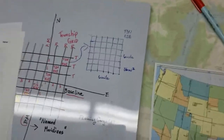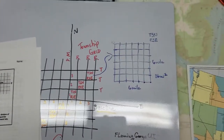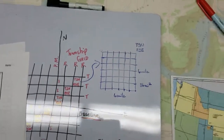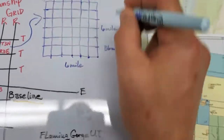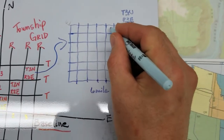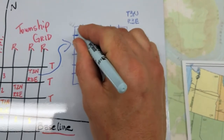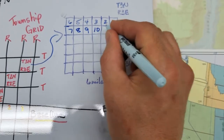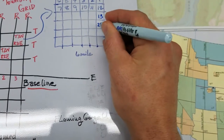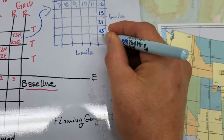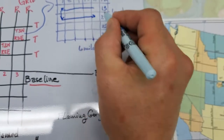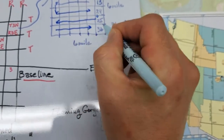These 36 squares are numbered. Starting in the northeast corner and proceeding west: 1, 2, 3, 4, 5, 6, then we come down and go east: 7, 8, 9, 10, 11, 12, and so on in a boustrophedon pattern. Here's 13, here's 24, here's 25, and then section 36 ends up in the southwest corner. Each one of these is a section — one square mile.